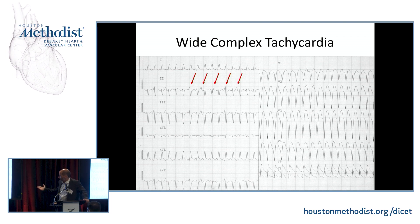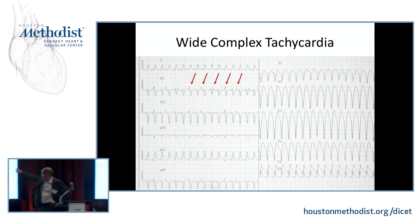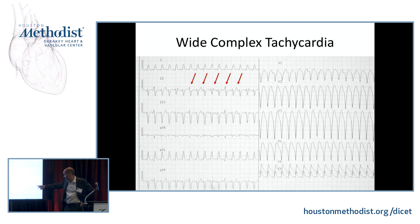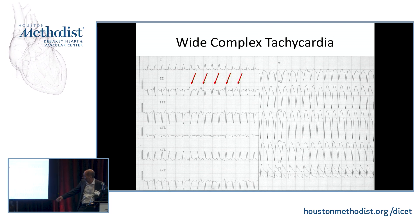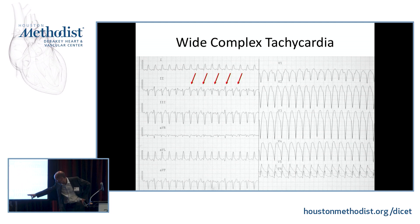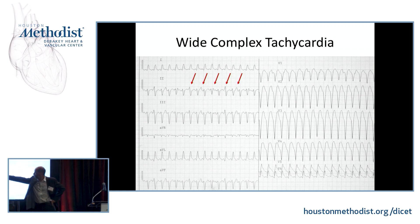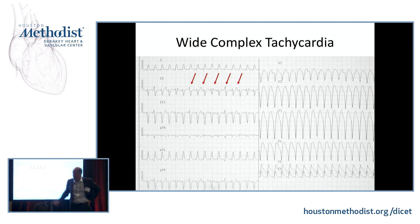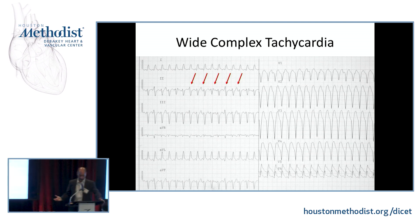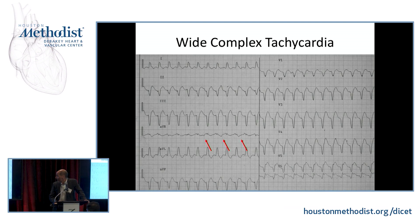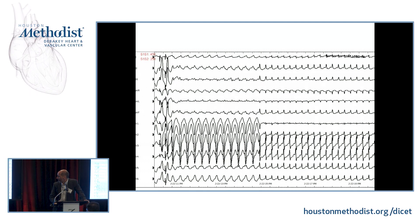In another wide complex tachycardia with a left bundle branch block pattern, there is no RS complex anywhere in the precordial leads — only deep Q waves or R waves. Looking carefully, you can see variations on the ST segment: those are the P waves, indicating AV dissociation — that's VT. When a wide complex tachycardia becomes narrow without interruption, that is also diagnostic of VT. A capture beat — a normally conducted QRS in the middle of ongoing VT — is evidence of AV dissociation.